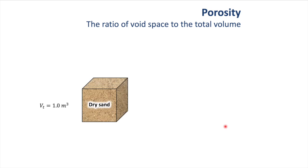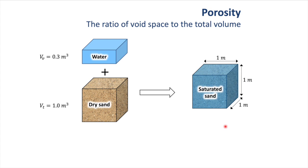If we had one cubic meter of dry sand, we would need about 0.3 cubic meters of water to fully saturate all the pore spaces or void spaces between the sand grains.